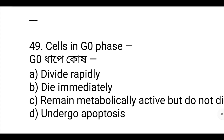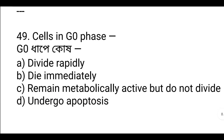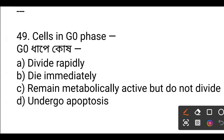Question: What happens to cells in G0 phase? Option C — cells in G0 are metabolically active but do not divide. G0 cells remain active in metabolism but do not undergo cell division.